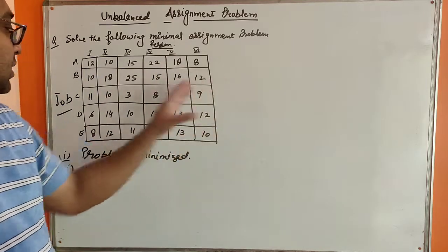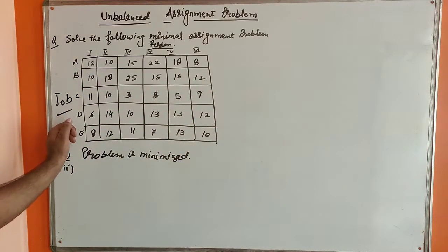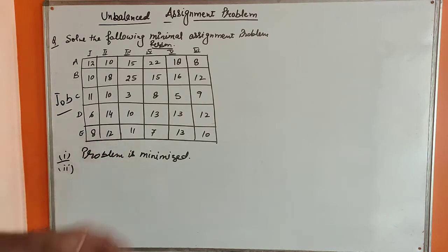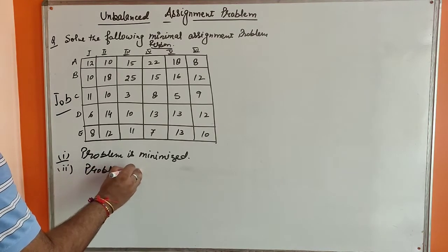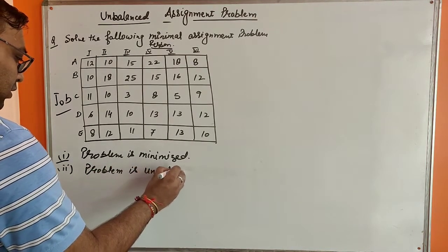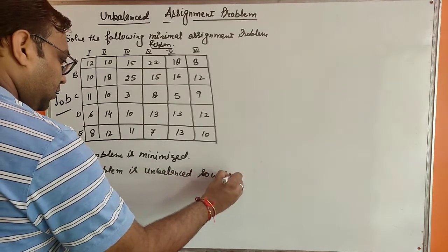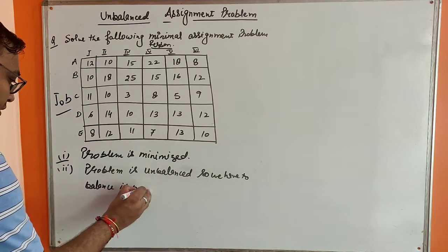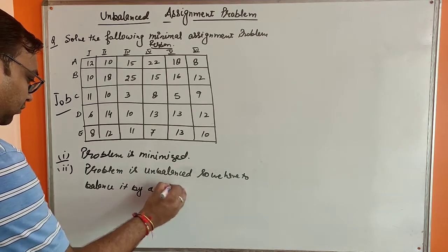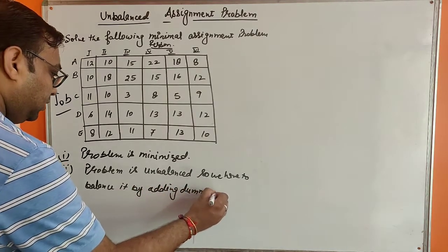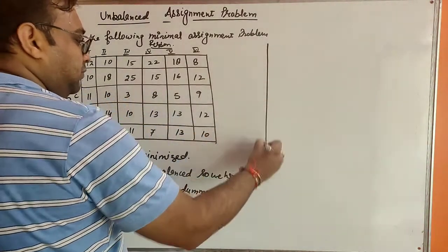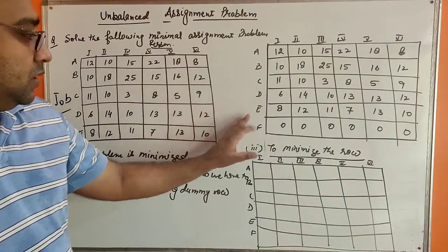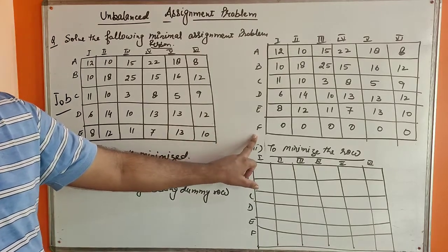Since this is an unbalanced problem, we have to balance it by adding a dummy row or dummy column. There are six columns and five rows, so we have to add one row with zero entries. So we add a dummy row and make a new matrix. Now this is the balanced problem — we add a dummy row with zero entries.